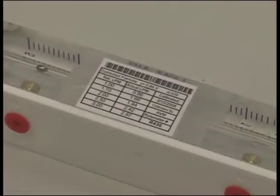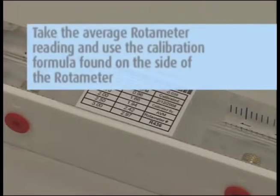All rotometers are calibrated against a primary standard quarterly. This calibration formula is located on the side of the field rotometer. Take the average rotometer reading and plug it into the calibration formula found on the side of the rotometer to determine your actual flow rate.